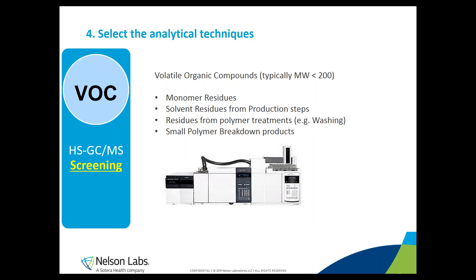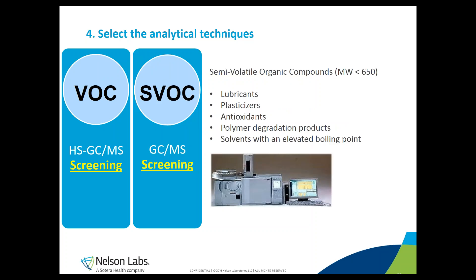To capture very small, generally volatile compounds, it is advised to use headspace gas chromatography coupled to mass spectrometry. Typical small compounds include monomer residues, solvent residues from production steps, residues from polymer treatment, and small polymer breakdown products. Mid-sized, less volatile compounds — called semi-volatile organic compounds — are analyzed by gas chromatography methods. Typical compounds here include lubricants, plasticizers, antioxidants, polymer degradation products, and solvents with an elevated boiling point.